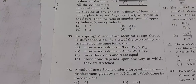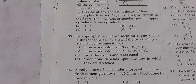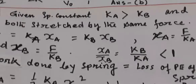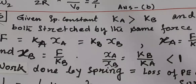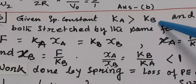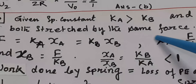Next job. Two springs A and B are identical except that A is stiffer than B. Spring constant of A is greater than spring constant of B. If the two springs are stressed by the same force — condition is same force is given — so force equals Kx. From here, more the K, less will be the x. With this idea we can solve this job. Spring constant of A is greater than Kb and both are stretched by the same force.